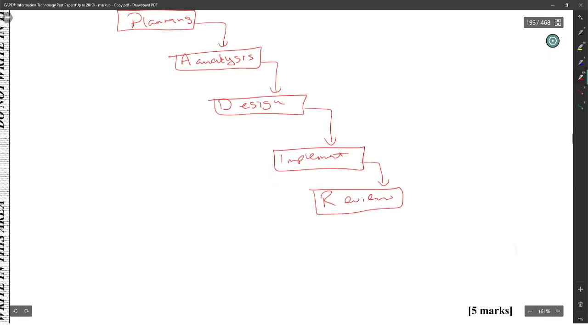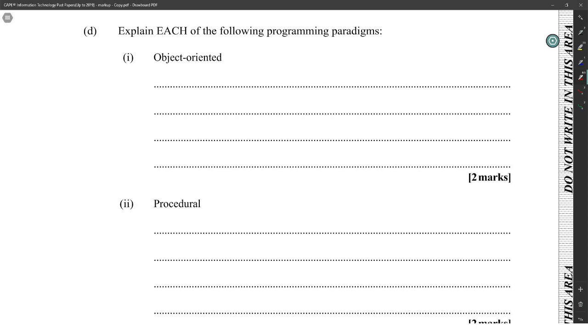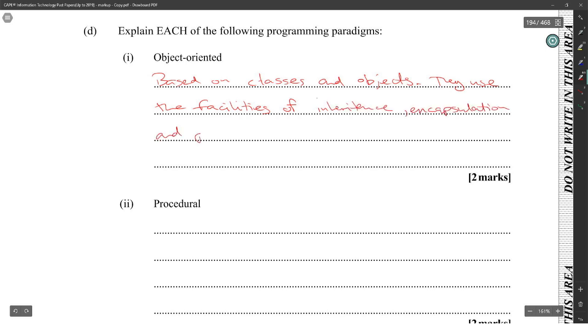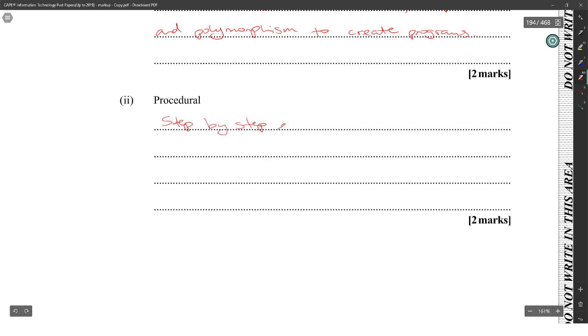Explain each of the following program paradigms. Object-oriented is based on classes and objects. They use the facilities of inheritance, encapsulation, and polymorphism to create programs. Procedural would be step-by-step execution of instructions in a linear pattern of logic.